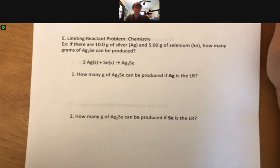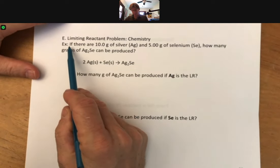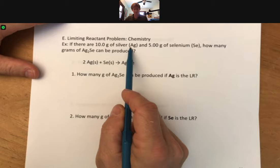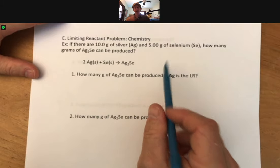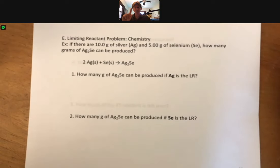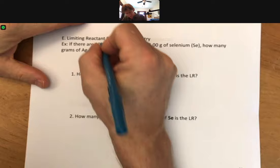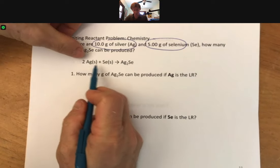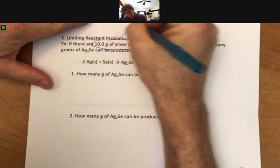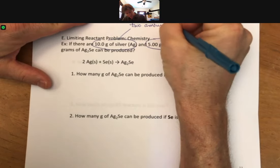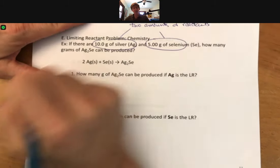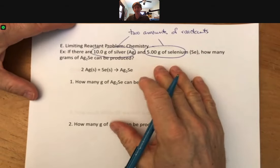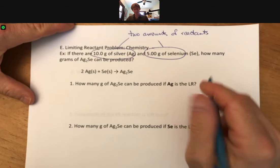This is our first limiting reactant problem in chemistry. Let's read and review the problem. It says if there are 10 grams of silver and 5 grams of selenium, my first clue that this is a limiting reactant problem is going to be two amounts of reactants, since silver and selenium are both reactants. Any time you get two amounts of reactants, it is a limiting reactant problem, and we want to learn to recognize them.